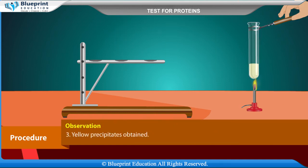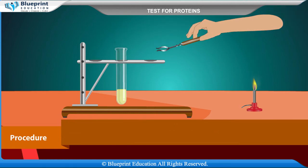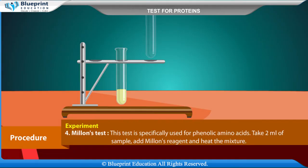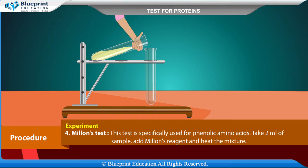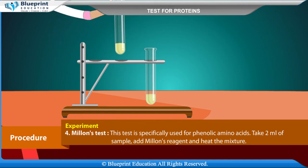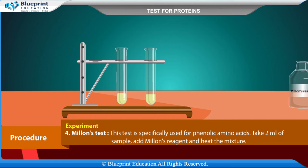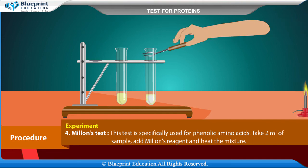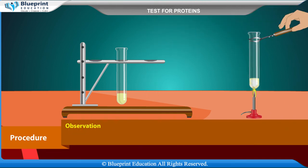Experiment 4 — Millon's Test: This test is specifically used for phenolic amino acids. Take 2 ml of sample, add Millon's reagent, and heat the mixture. Observation: White precipitate which turns red on heating. Inference: Protein present.